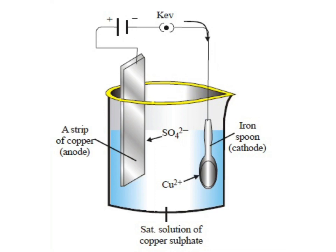For example, if we want to electroplate a key made of iron metal with a thin layer of copper metal, then we need to make the iron object the negative electrode and the copper plate the positive electrode, with copper sulfate solution as the electrolyte. When we pass electric current through the solution, we find that the copper plate has dissolved a little and the iron key has got a reddish layer of copper metal all over its surface.